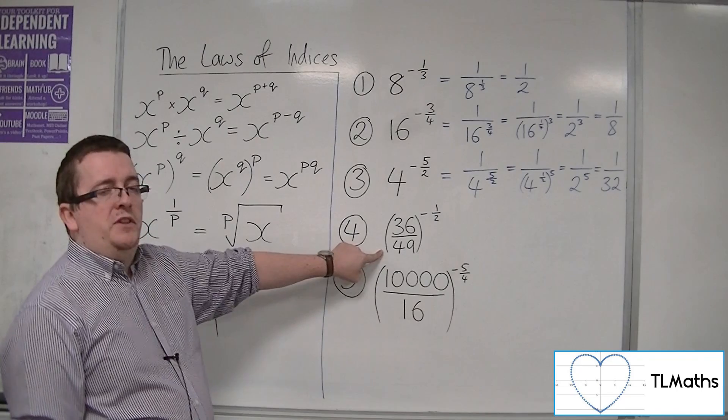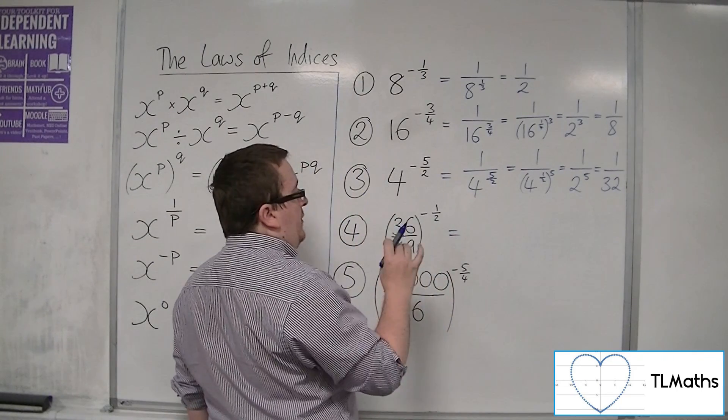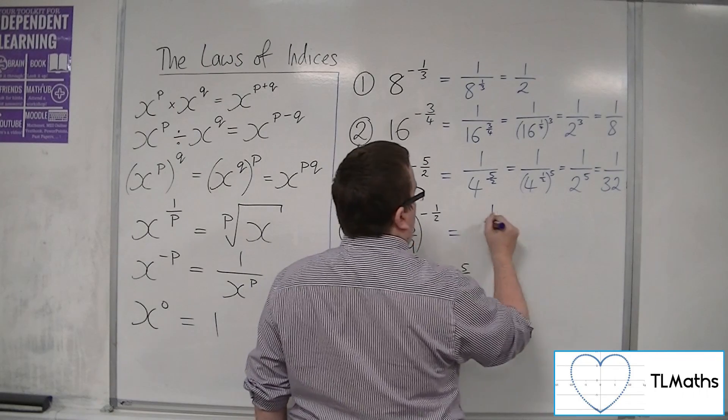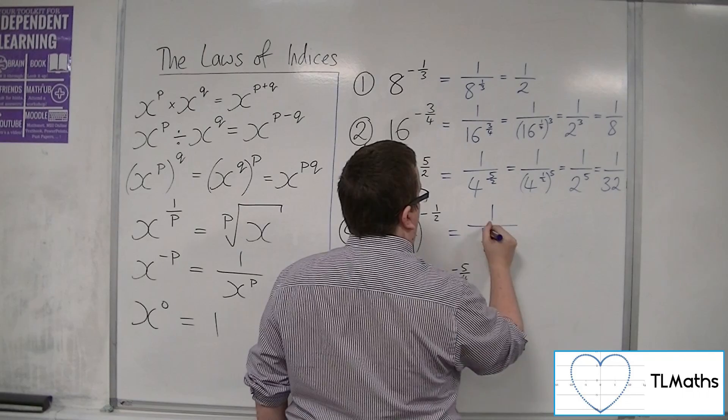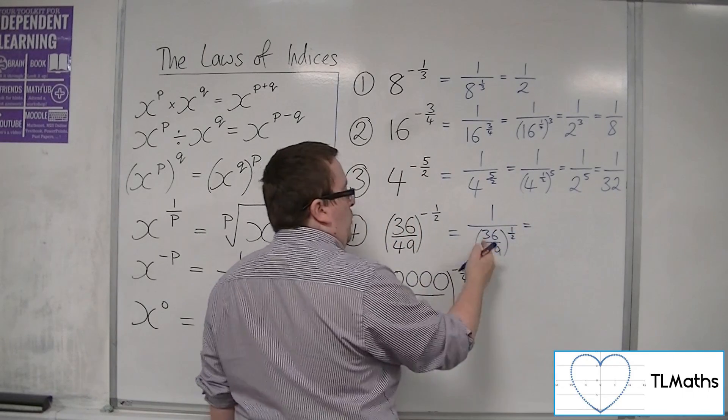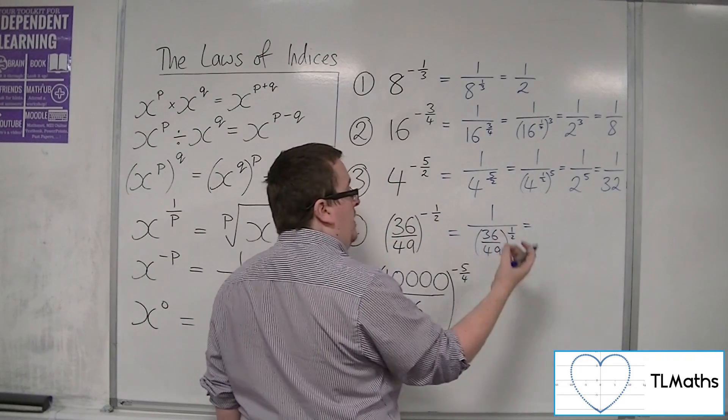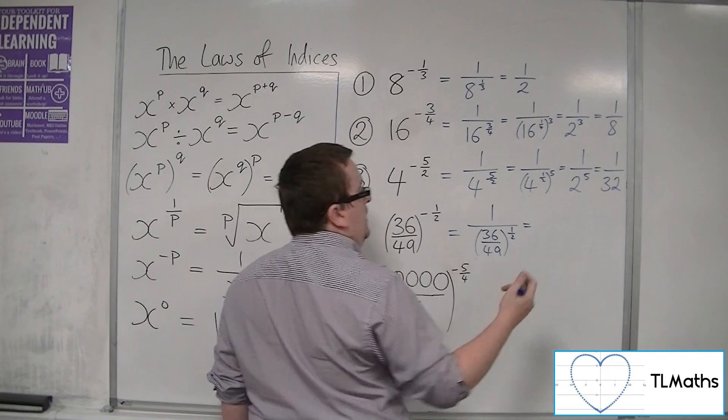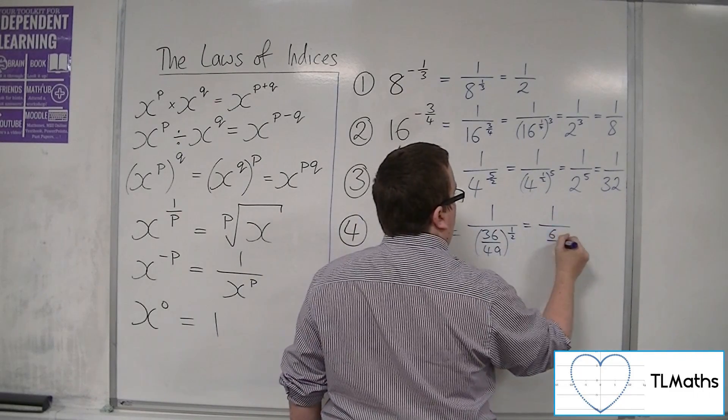36 over 49 to the minus 1 half. So we're going to deal with the minus sign first. So that's 1 over 36 over 49 to the half. Now when you have the square root of a fraction, you square root the numerator. You square root the denominator. So that's 1 over 6 over 7.